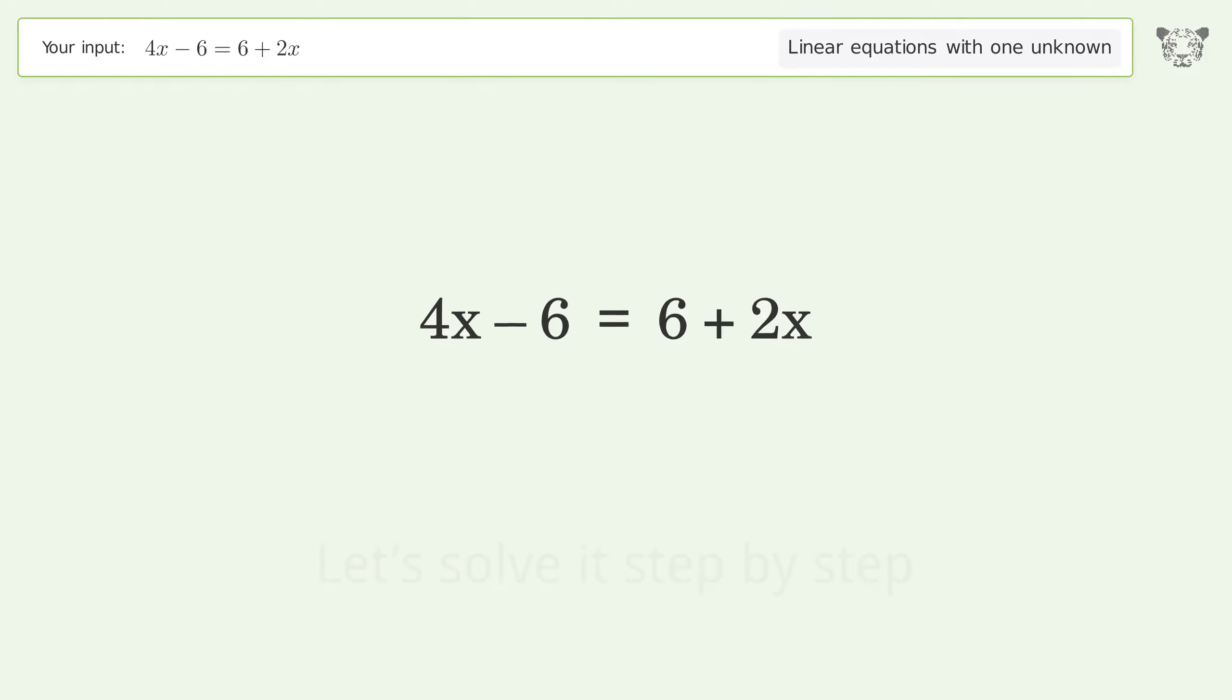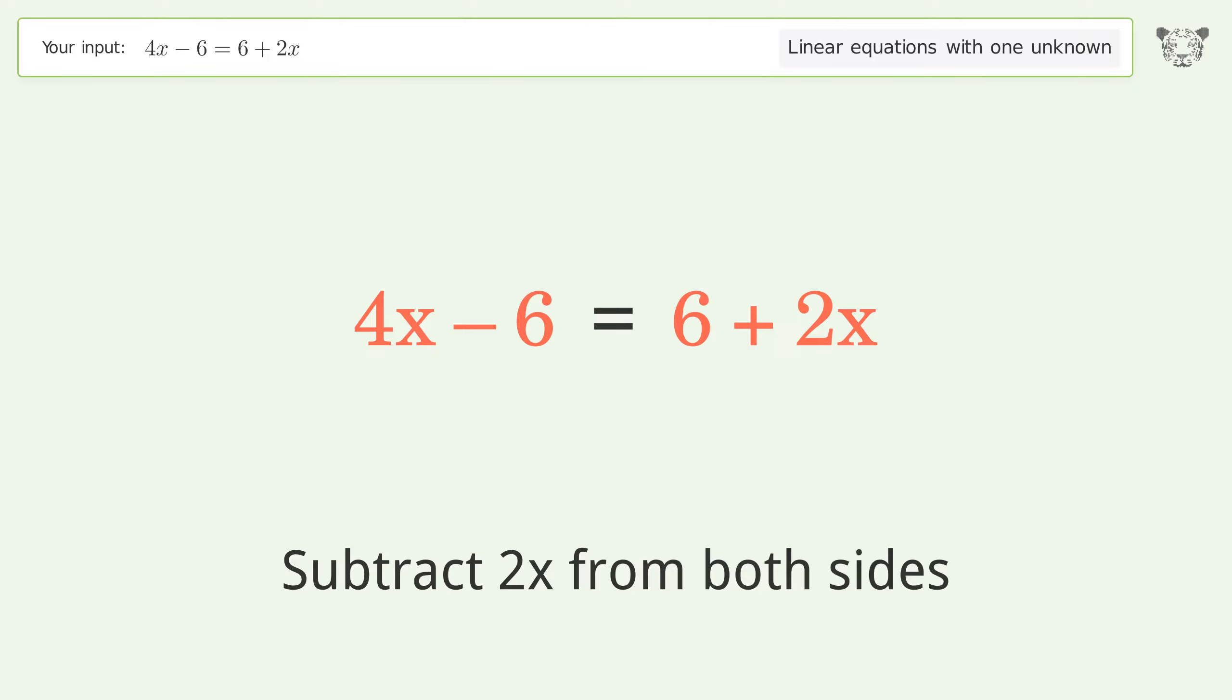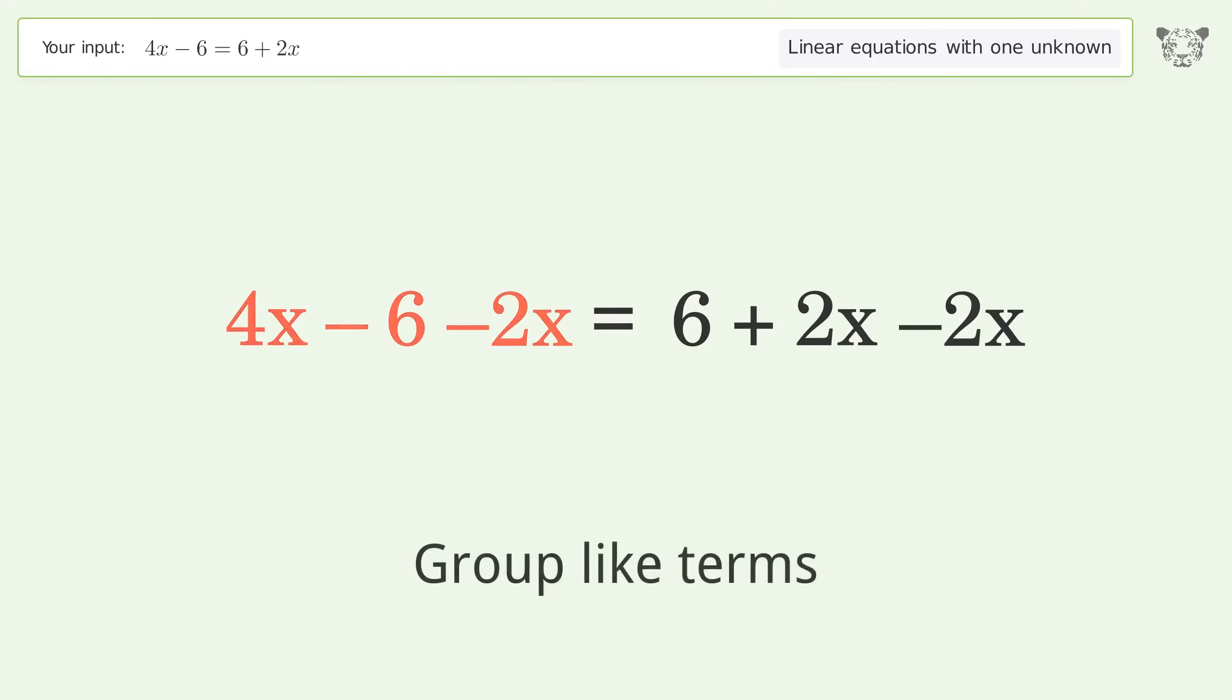Let's solve it step by step. Group all x terms on the left side of the equation. Subtract 2x from both sides. Group like terms.